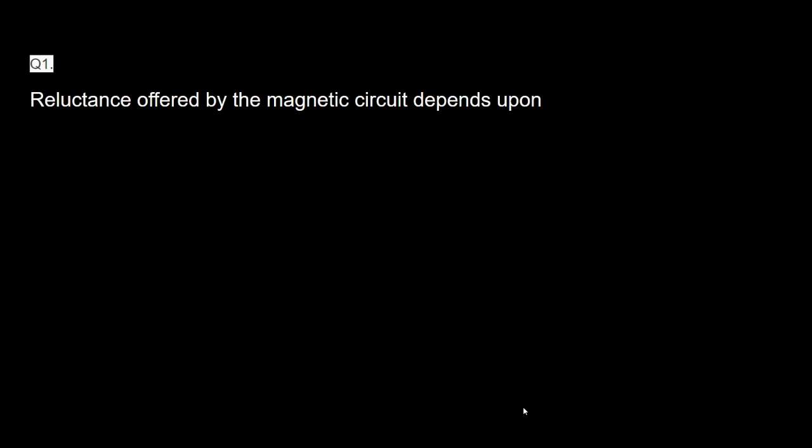The first question: the reluctance offered by the magnetic circuit depends upon what? Reluctance is the opposition offered by a magnetic circuit to the production of magnetic flux.